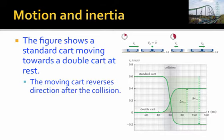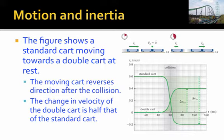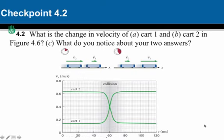There are some significant things about this motion. One, the moving cart reverses direction after its collision. And two, the change in velocity of the double cart is half of the change in velocity of the standard cart. The change in velocity is this dotted line. The magnitude of the double cart's change in velocity is half as much as that of the standard cart. So you can practice here finding the change in velocity of cart one and cart two in this figure and decide what the answers are. Be careful about the change in velocity and the sign of the change in velocity.